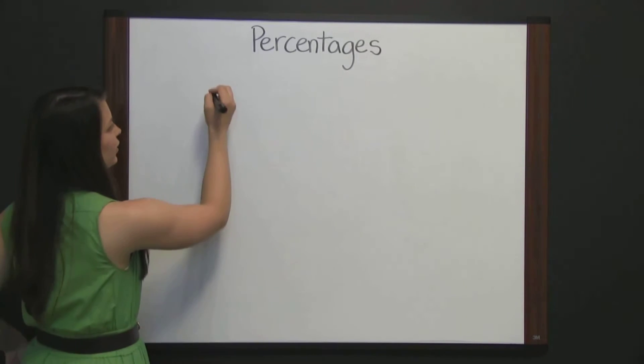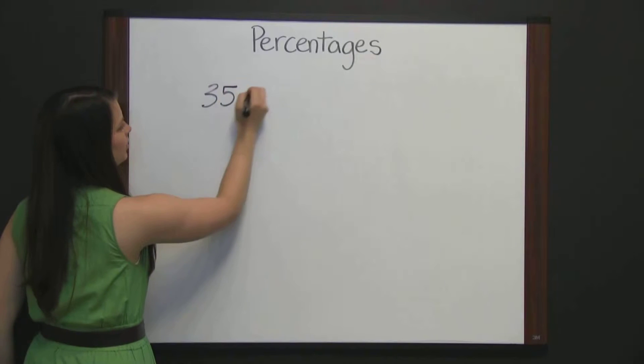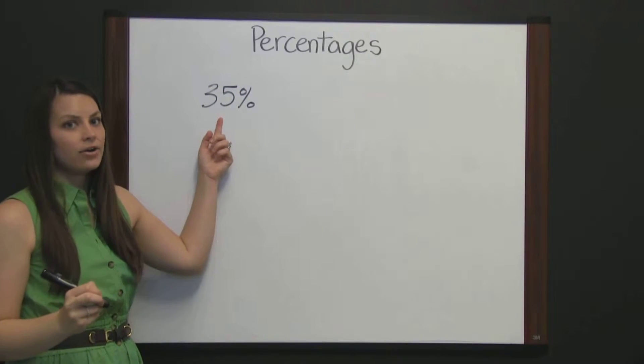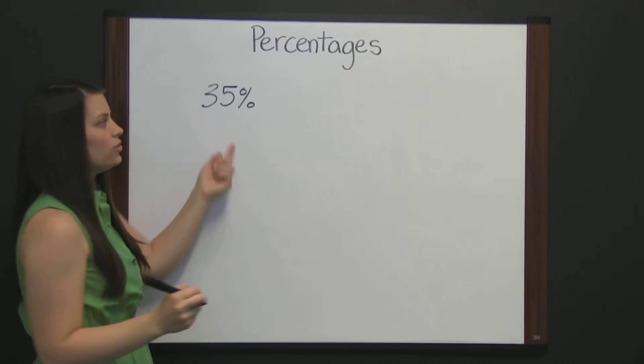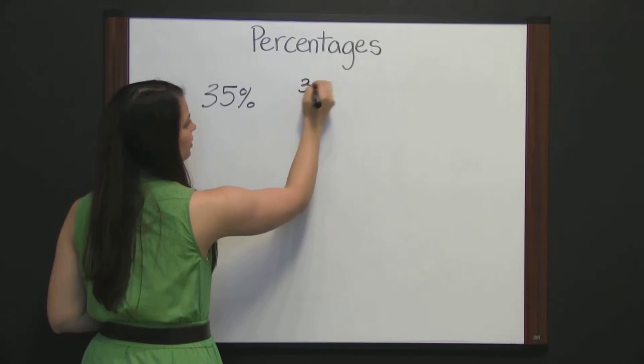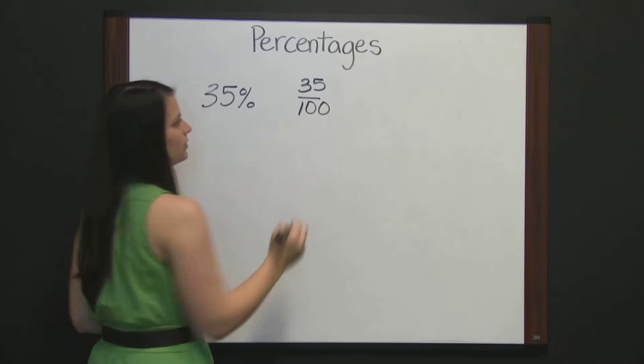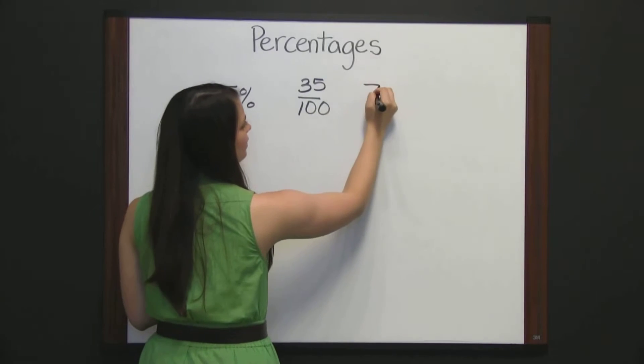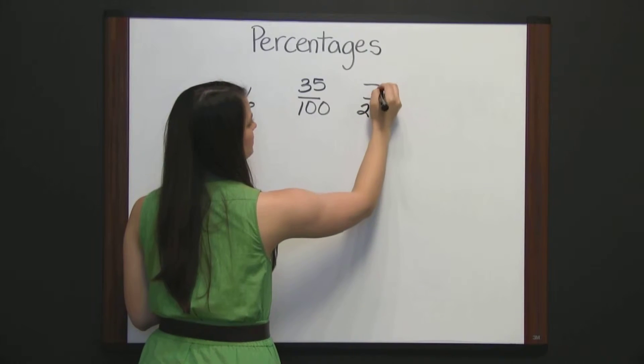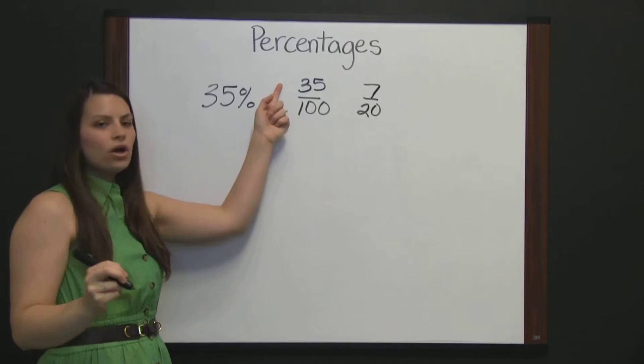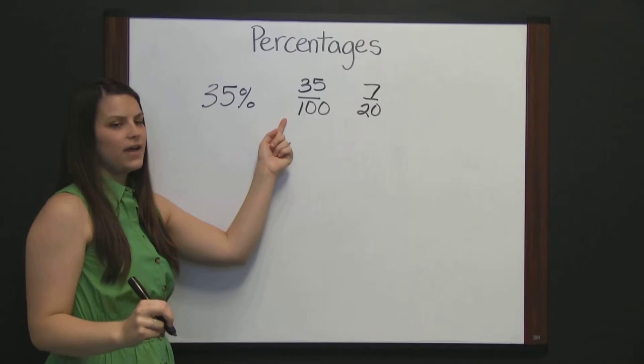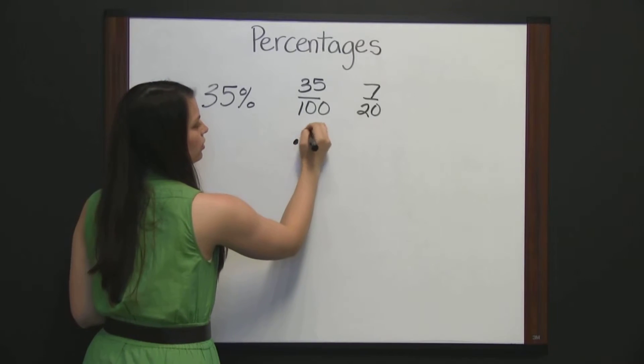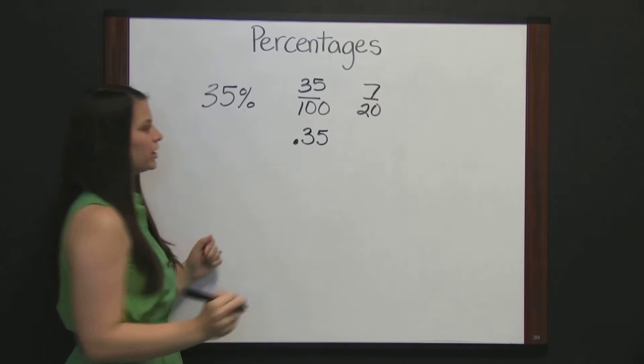For example, 35% means 35 out of 100. So you could express it as 35 over 100, which could then be simplified to 7 twentieths. You could also write 35 out of 100 as a decimal, 0.35.